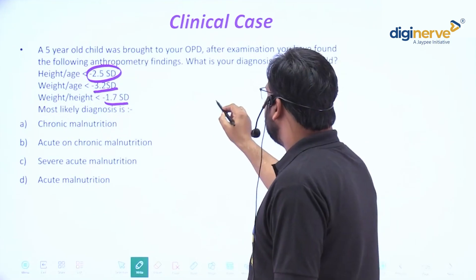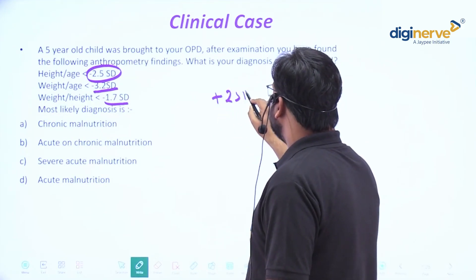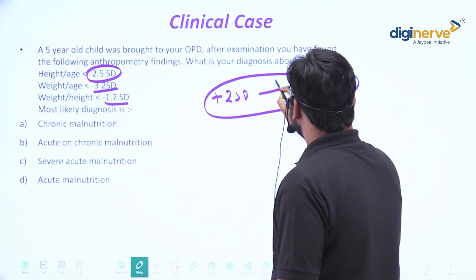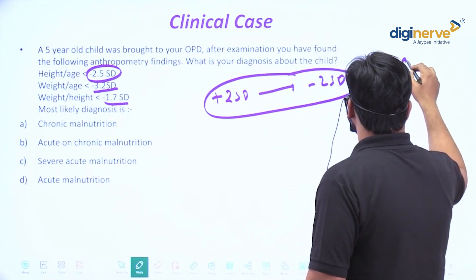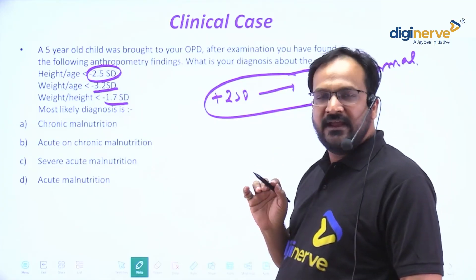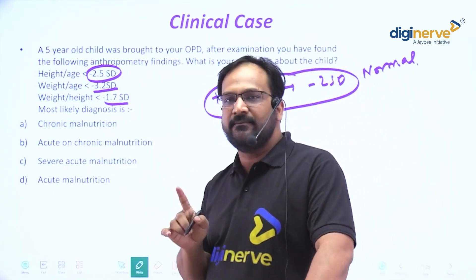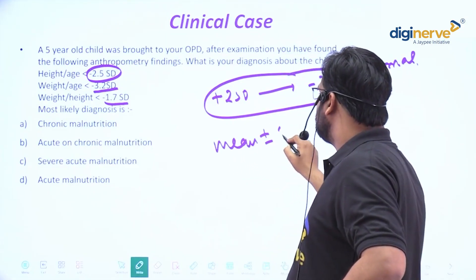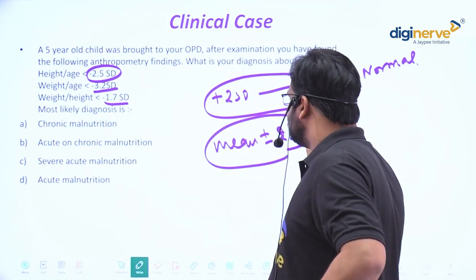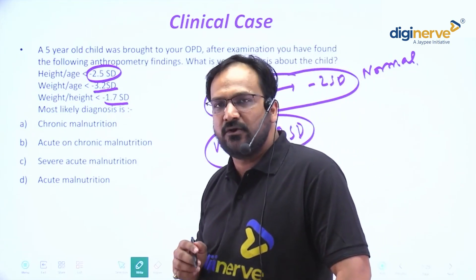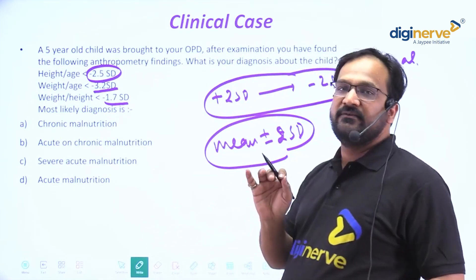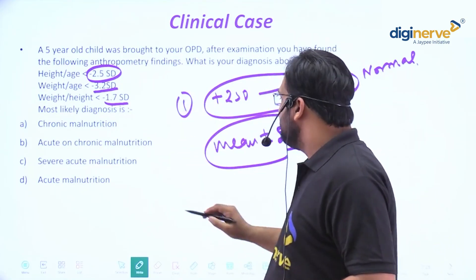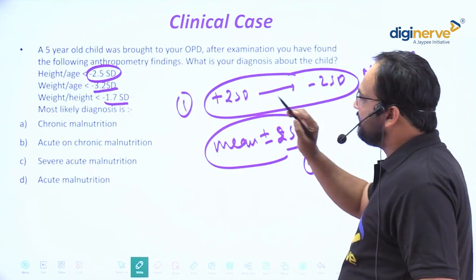The first thing is that anything between plus 2 SD and minus 2 SD is normal. Mean plus or minus 2 SD is the normal range. So if any value falls between this range, it will be considered normal. That is the first and very important criteria you must remember.